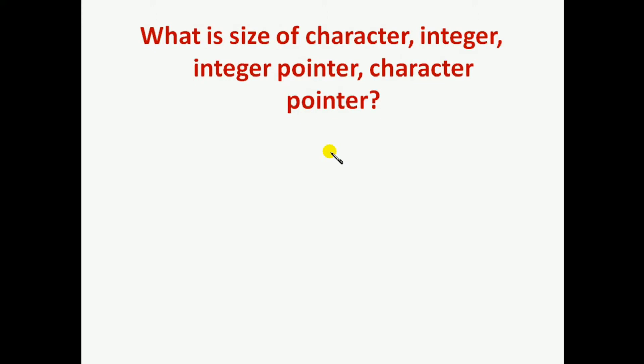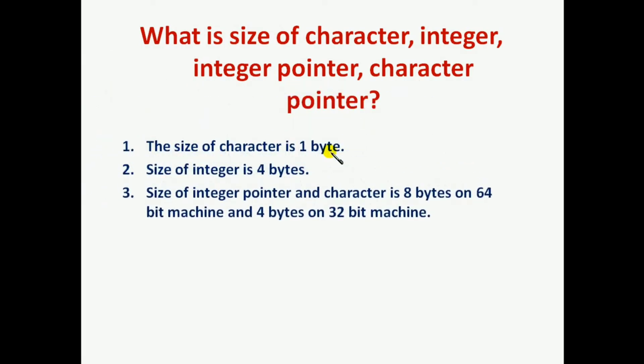The first question is: What is the size of character, integer, integer pointer, and character pointer? The size of character is 1 byte. Size of integer is 4 bytes. Size of integer pointer and character pointer is 8 bytes on a 64-bit machine and 4 bytes on a 32-bit machine.